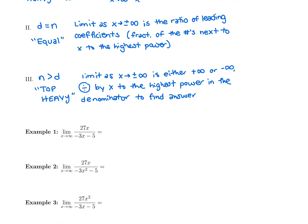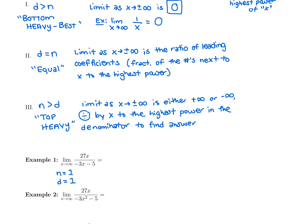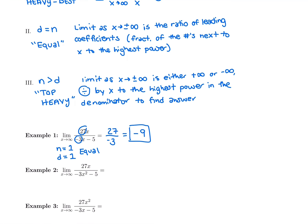Let's look at examples. In the first one, the limit as x goes to infinity — the numerator has degree 1 (just x), and the denominator also has highest power 1. This is equal. We make a fraction out of the leading coefficients: the numerator has 27 in front of x, and the denominator has negative 3. So the answer is 27 divided by negative 3, which is negative 9.